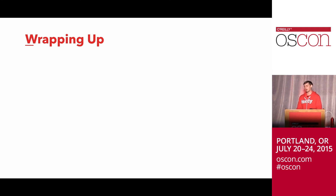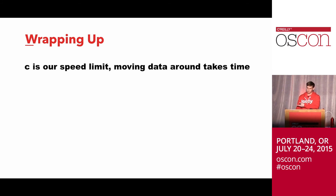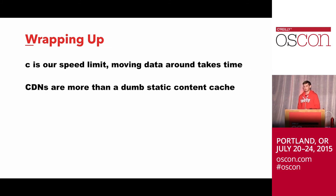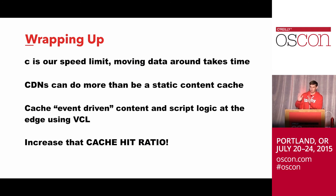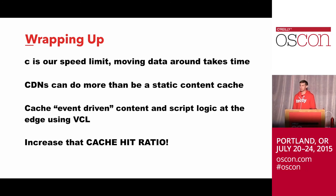Some final thoughts: the speed of light is slow and moving things around takes time. CDNs can be much more than just a dumb static content cache if you allow them to be. We talked about different types of content, including event-driven content, which can be cached on CDNs. With Varnish and VCL, you can do logic scripting out on the edge nodes. All of these things are about increasing the cache hit ratio, which reduces your requests back to origin so you can pay less for your origin. That's about all I have — happy to answer any questions.